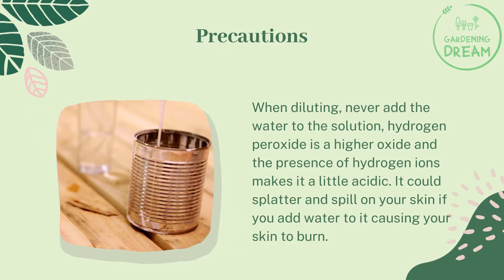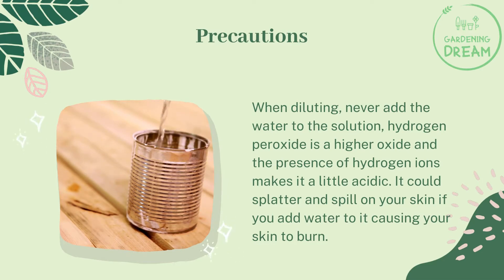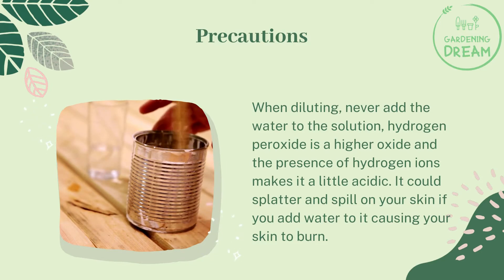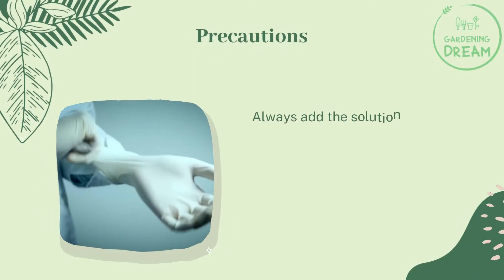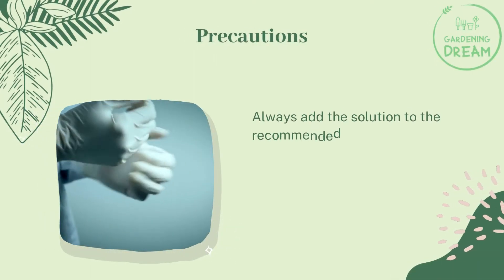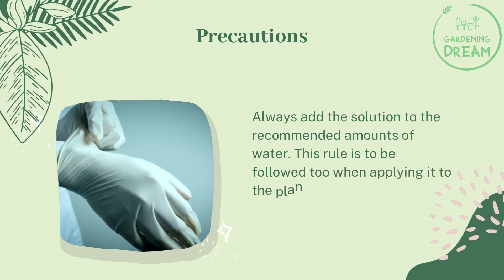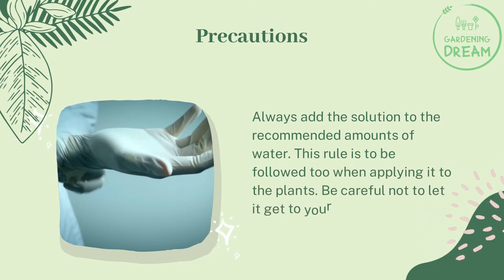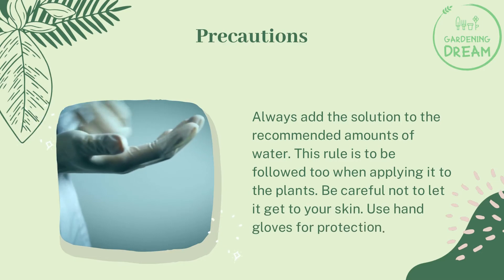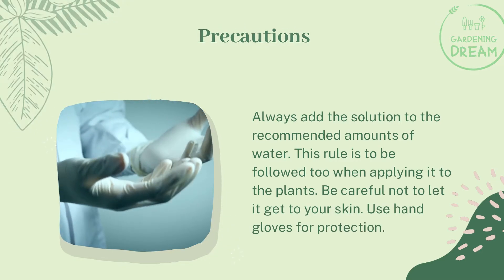Precautions: When diluting, never add water to the solution. Hydrogen peroxide is a higher oxide, and the presence of hydrogen ions makes it slightly acidic. It could splatter and spill on your skin if you add water to it, causing your skin to burn. Always add the solution to the recommended amounts of water. This rule also applies when applying it to the plants. Be careful not to let it get to your skin — use hand gloves for protection.